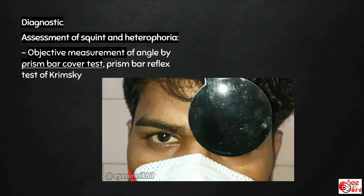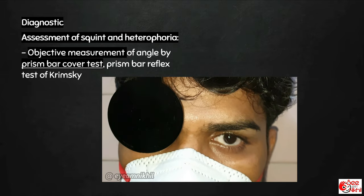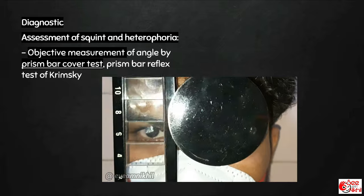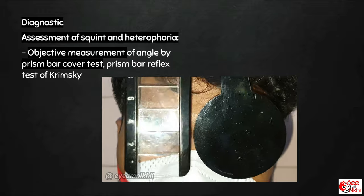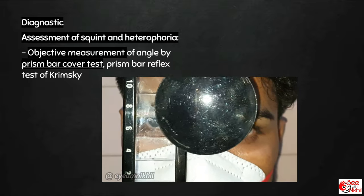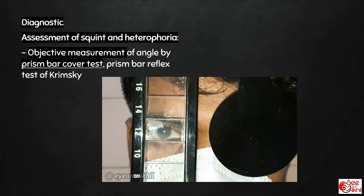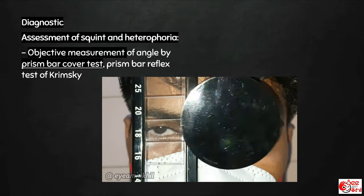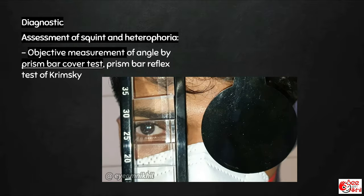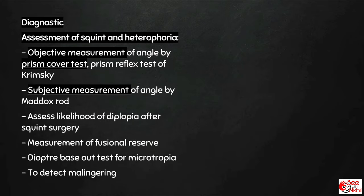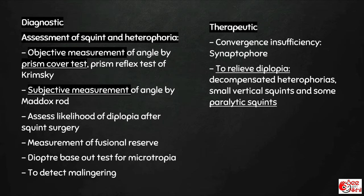Prisms can be used for objective measurement of deviation in squint using prism bar cover test and prism bar reflex test. In the prism bar cover test in a patient with exotropia, prisms of successively increasing power are kept in front of the deviated eye with the apex towards the deviation, until neutralization of the alternate cover test is obtained.